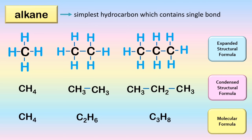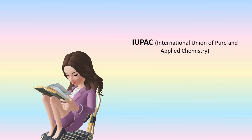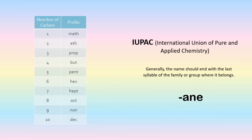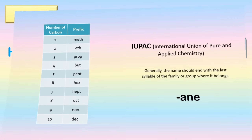Now, how are we going to name hydrocarbons? The International Union of Pure and Applied Chemistry (IUPAC) system is used for the naming of organic compounds. As a general rule, the name should end with the last syllable of the family or group where it belongs. For alkane group, it should end with '-ane'. In naming hydrocarbons we must also consider the number of carbons. For one carbon: meth-, two: eth-, three: prop-, four: but-, five: pent-, six: hex-, seven: hept-, eight: oct-, nine: non-, ten: dec-.